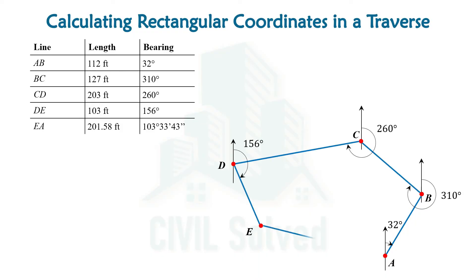The point of differentiation between the open traverse and a closed traverse is that in a closed traverse, the starting point and the ending point are the same — like here, the starting point is A and also the ending point is A.